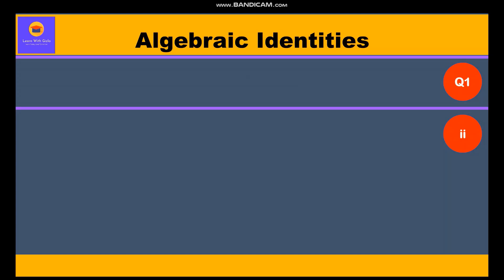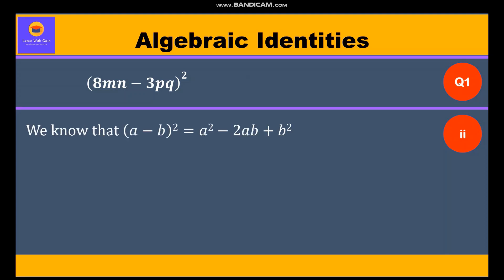Now let us move to the second part: (8mn minus 3pq) whole square. We know (a minus b) whole square equals a squared minus 2ab plus b squared. So let us substitute a equal to 8mn and b equal to 3pq in identity 2.